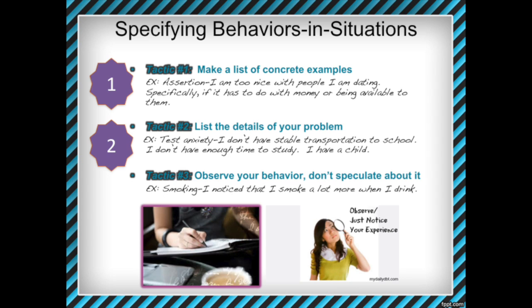For example, if you have test anxiety, some problems that could keep it going could be: you don't have stable transportation to school, so you're already stressed about how you'll get to the test. You don't have enough time to study. Maybe you work, have kids, or have extracurricular activities, creating stress because you're not prepared. Think about what's making your bad behavior difficult to stop, or making it difficult to start the behavior you want. These details could be thoughts, feelings, actions, or obstacles. Just brainstorm — there are no wrong answers.